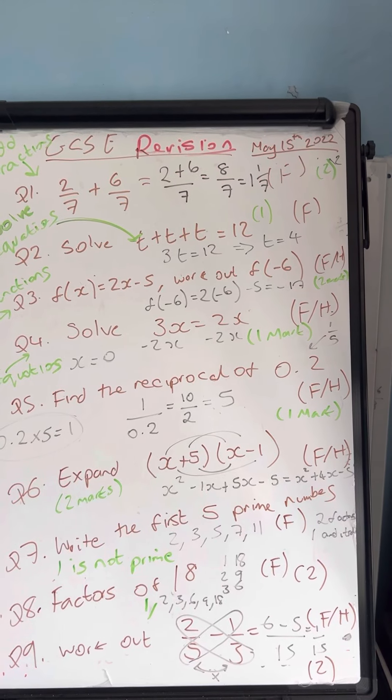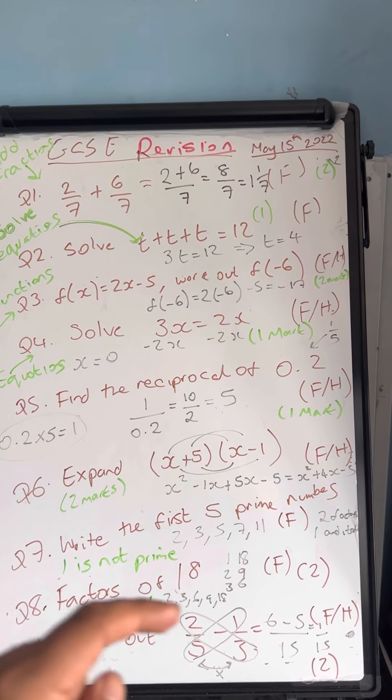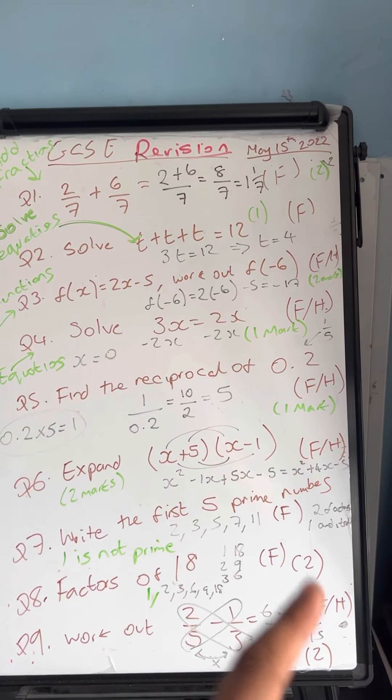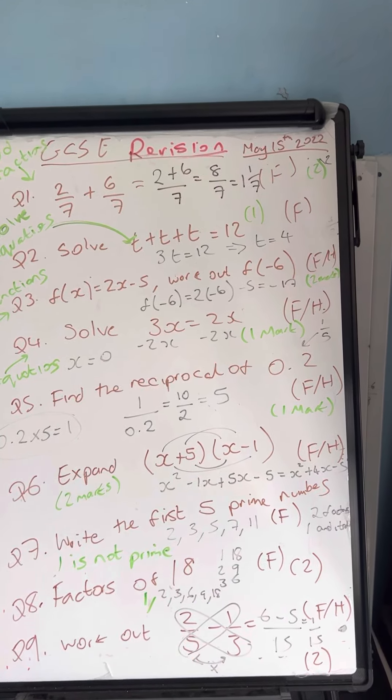This is question number seven. Write the first five prime numbers. They are 2, 3, 5, 7, 11. Remember that 1 is not prime.